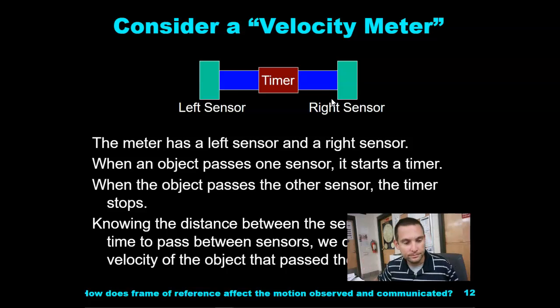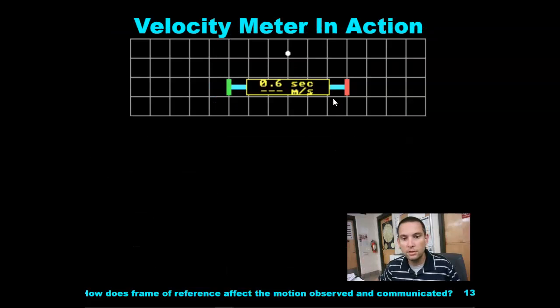If you know the distance between the two and you have the time, distance over time, we can get velocity.